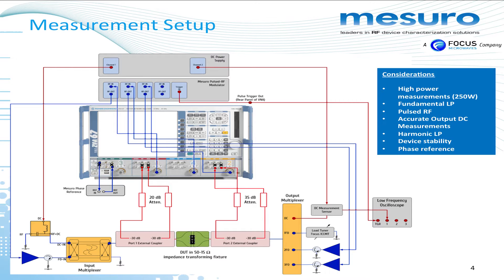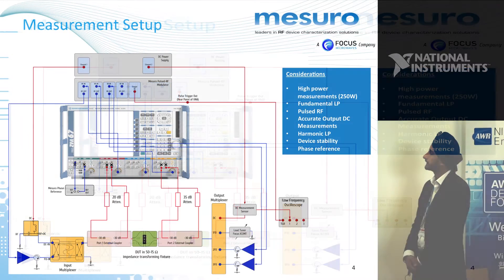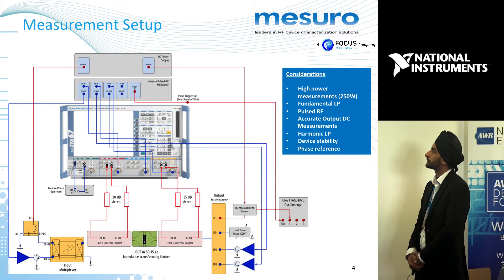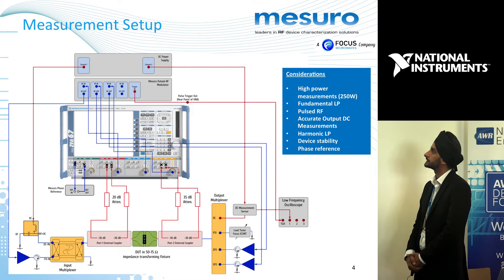This is the Missouri high-power setup. This particular measurement was done with a ZVA-67. We used an impedance transformer to load our DUT. The entire measurement was done in pulsed RF conditions. The DC was left in continuous mode.